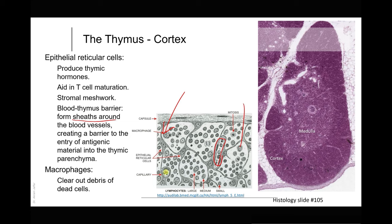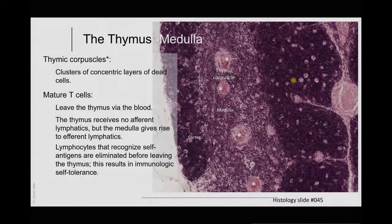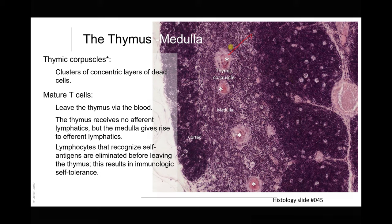The epithelial reticular cell processes are wrapped around blood vessels, forming sheaths that create the blood-thymus barrier, preventing antigenic material from entering the thymic parenchyma. Macrophages are also present in the cortex. In the medulla, cells are more separated and less densely packed. The fine cytoplasmic extensions of thymic epithelial cells are visible in the medulla as well as the cortex.